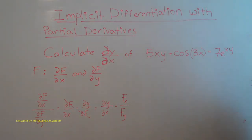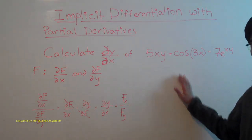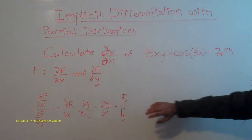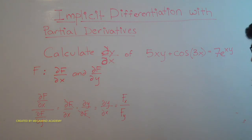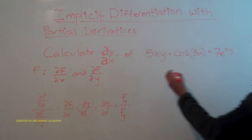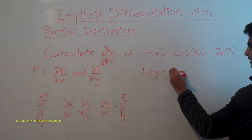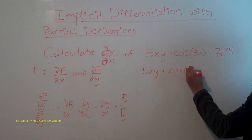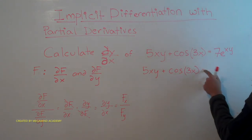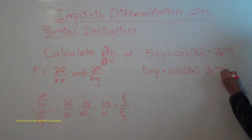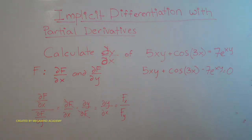The first thing that we have to do is move everything over to one side, because we don't want these equal signs in our partial derivatives. So if we move it over to one side, we're going to get 5xy plus cosine of 3x minus 7e to the xy power equals 0.